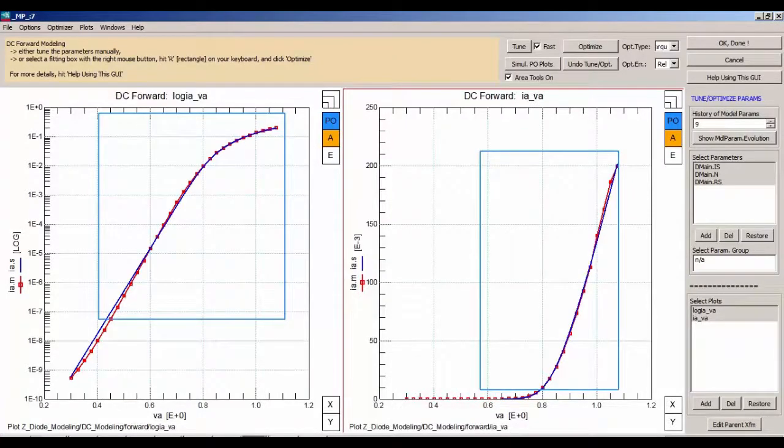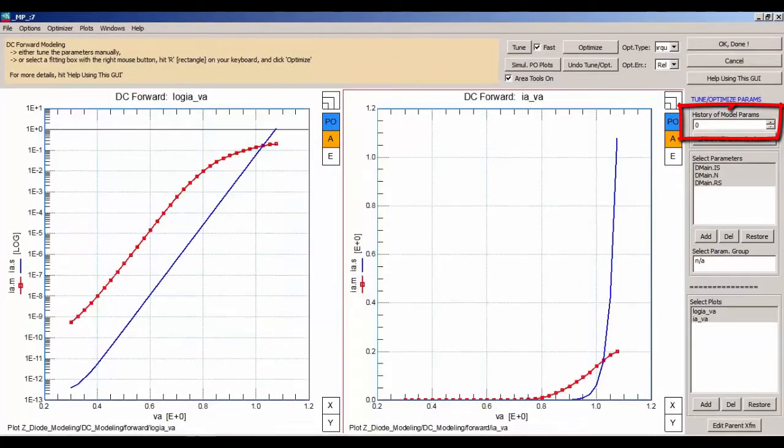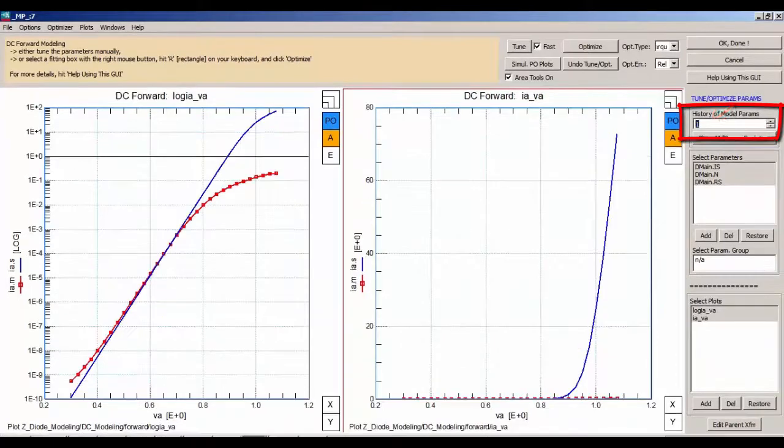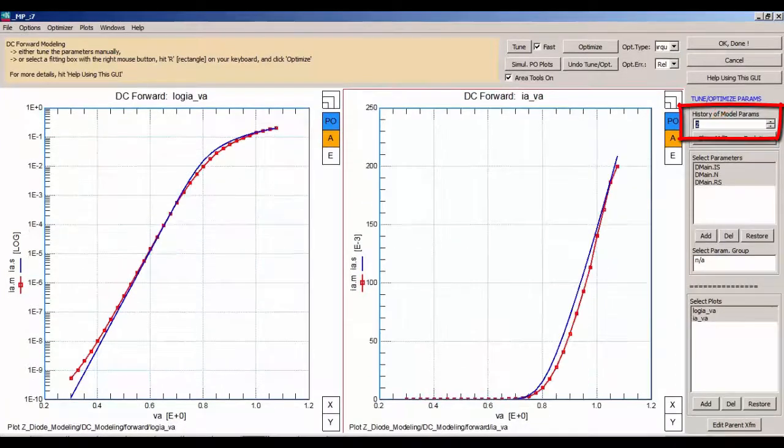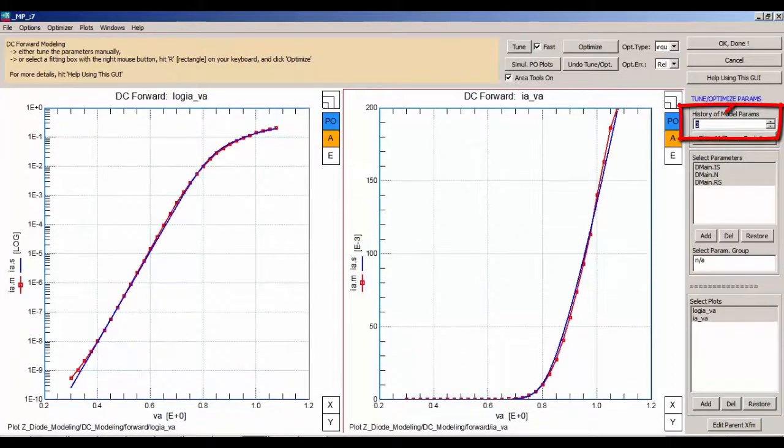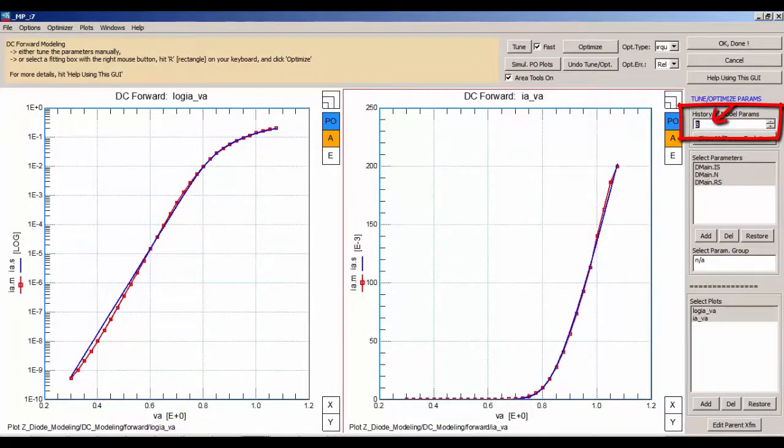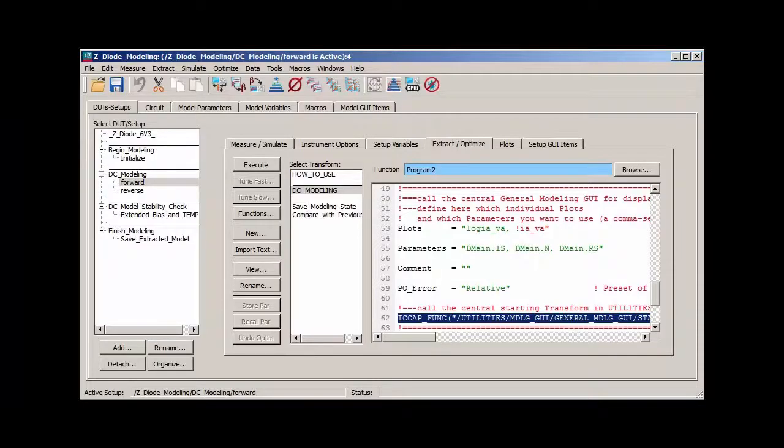Here I can also recapitulate our modeling steps. This was our starting point, this was the result after the manual tuning, after the first optimization and after the last one. If not satisfied, I could also step back and apply another modeling strategy. But for this demo, I hit OK, done and close the window and we are back in our model file.